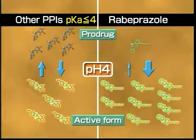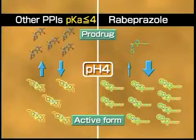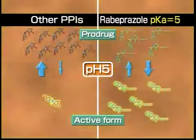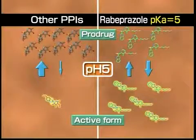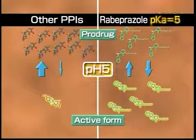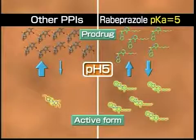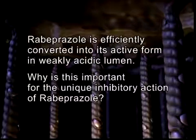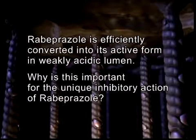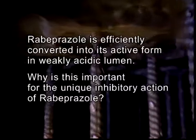The pKa for most proton pump inhibitors, except for rabeprazole, is below 4. Rabeprazole has a pKa of 5. This means rabeprazole can produce more active forms even in weak acid, and is thus efficiently converted into its active form in a weakly acidic lumen.